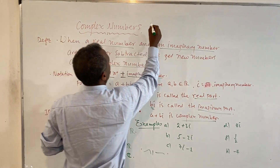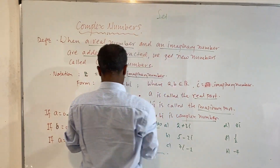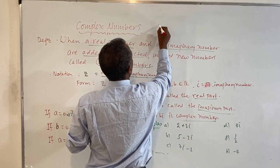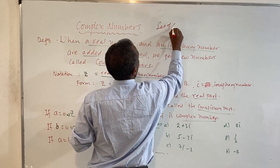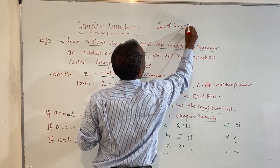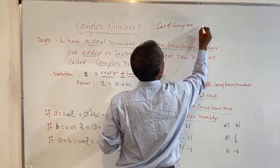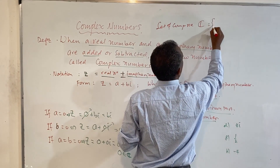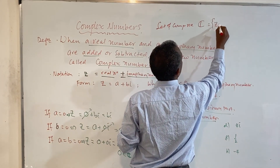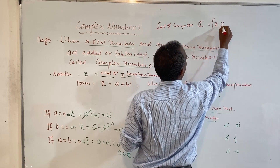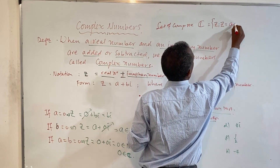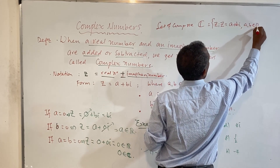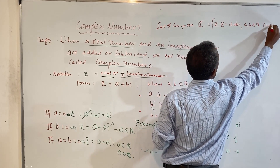The set of complex numbers — we denote it C — is defined as the set of all numbers Z equal to A plus Bi, where A and B are elements of the real numbers and i is equal to the square root of negative one.